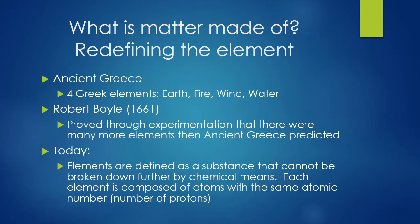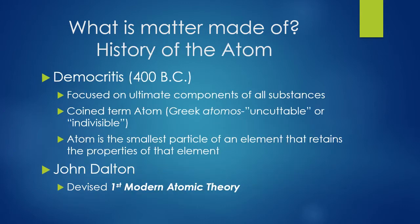Each element on the periodic table is composed of atoms that have the same atomic number. Democritus took it in a slightly different direction. Instead of focusing on the elements, he focused on the ultimate components of all substances. He coined this ultimate component as the atom, which is Greek for atomists, meaning uncuttable or indivisible. An atom is the smallest particle of an element that retains the properties of that element.